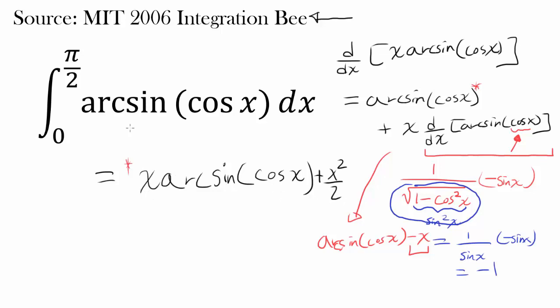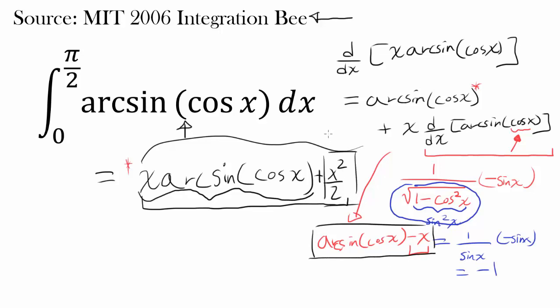You may say why? The indefinite integral is the expression you have to differentiate to get arcsin(cos x). When you differentiate this entire thing, you get arcsin(cos x). Because differentiating x·arcsin(cos x) gets you arcsin(cos x) minus x, and differentiating x²/2 gets you plus x, and plus x and minus x cancel out, leaving arcsin(cos x). So we have found the indefinite integral.